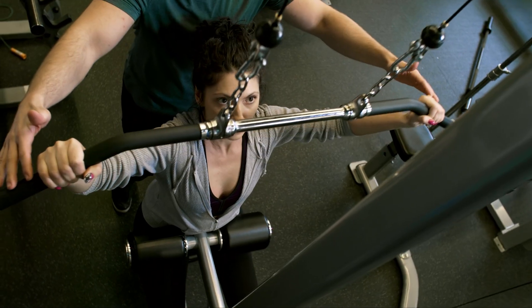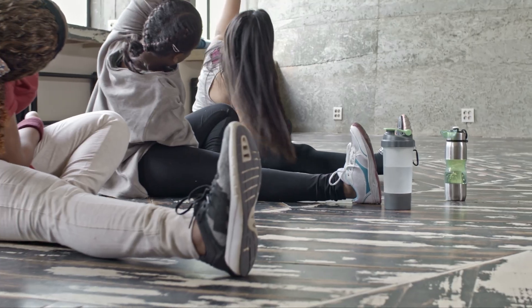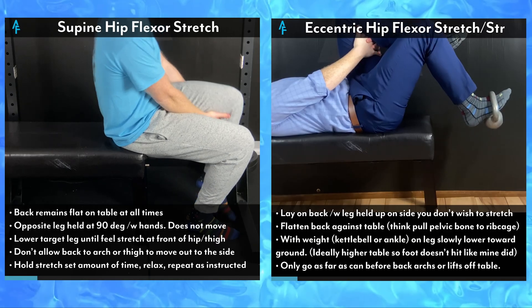Most of you watching just want the exercises, so we'll talk about those and then come back. To improve anterior tilt, we want to improve flexibility of two muscles and the strength of two others.